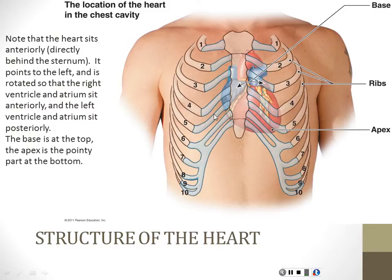The location of the heart: when we're taught in elementary school to put our hands on our hearts, we're way over to the left of where the heart actually is. The heart's in the center of the chest — it just leans to the left. It's a midline organ that has a point that points sort of parallel to the contour of the lower rib cage over to the left.